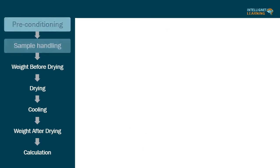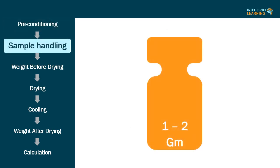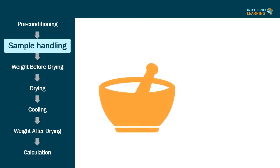Second step, sample handling: Unless otherwise directed in the individual method of analysis, take one to two grams of test specimen. Mix the substance to be tested, and if it is in the form of large particles, reduce the particle size to about 2 millimeters by crushing.